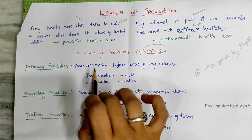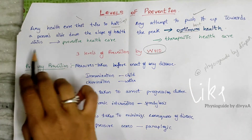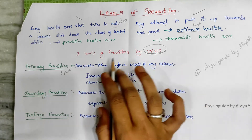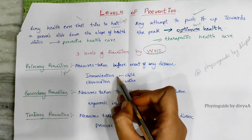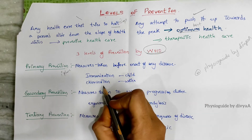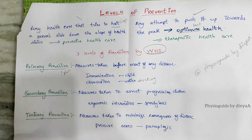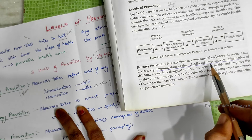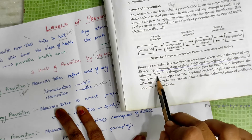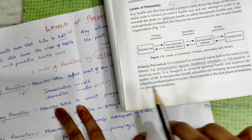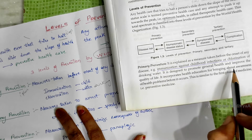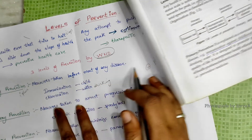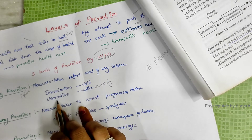Primary prevention is the first phase of prevention. These are measures taken before the onset of any disease — for example, immunization in children, giving vaccination, and chlorination of drinking water. It is designed to promote general health and improve the quality of life, and incorporates health education to bring about awareness of health problems before they occur. It is similar to the first phase of preventive medicine.